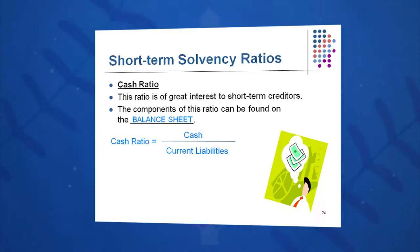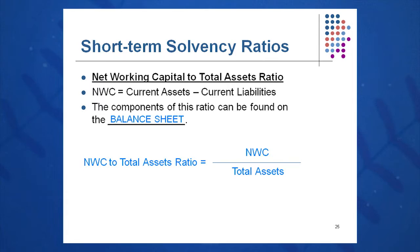Net working capital to total assets: as noted last session, net working capital is current assets minus current liabilities. We divide that by total assets to see what percentage of our total assets are tied up in net working capital.